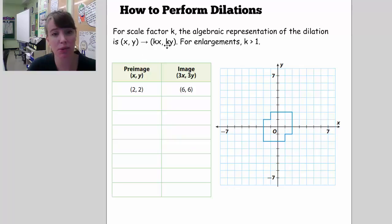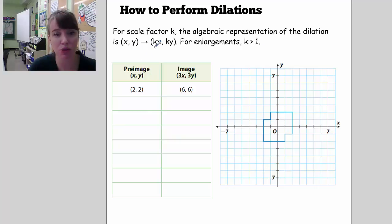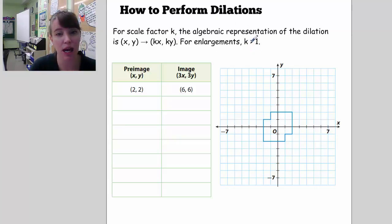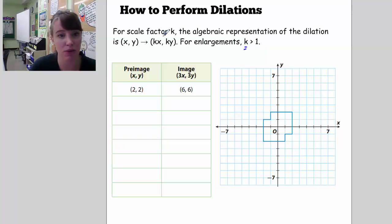We talked a little bit about this in the last lesson, and it's fairly easy to perform a dilation because all you're going to do is take the x, y coordinates and multiply each of the x and the y by the scale factor. For enlargements, k is greater than 1. For reductions, k is less than 1. The k is the scale factor.